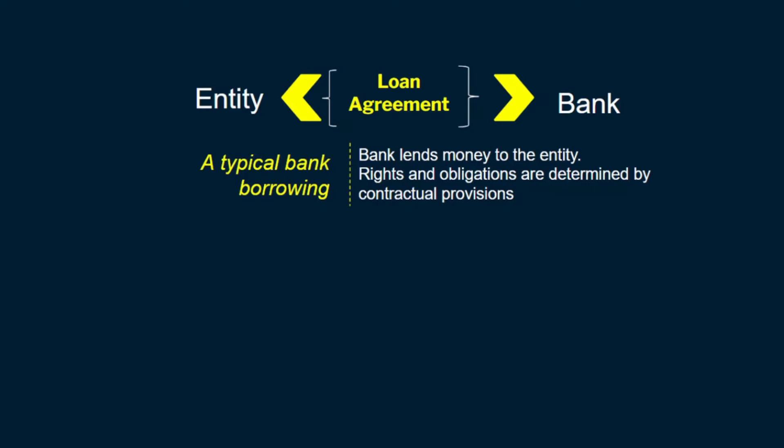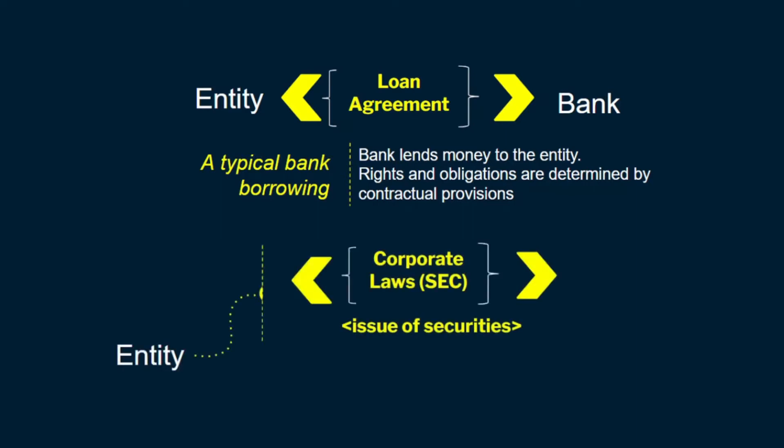But if an entity purchases stock from a stock market, that entity doesn't go to the issuer entity and sign an agreement. Rather, this is all in the air. IFRS 9 understands this and considers it a virtual agreement whereby the agreement is implicit. The issuing entity actually registers the security with the Securities Exchange Commission, and the rights and obligations are protected by corporate laws.